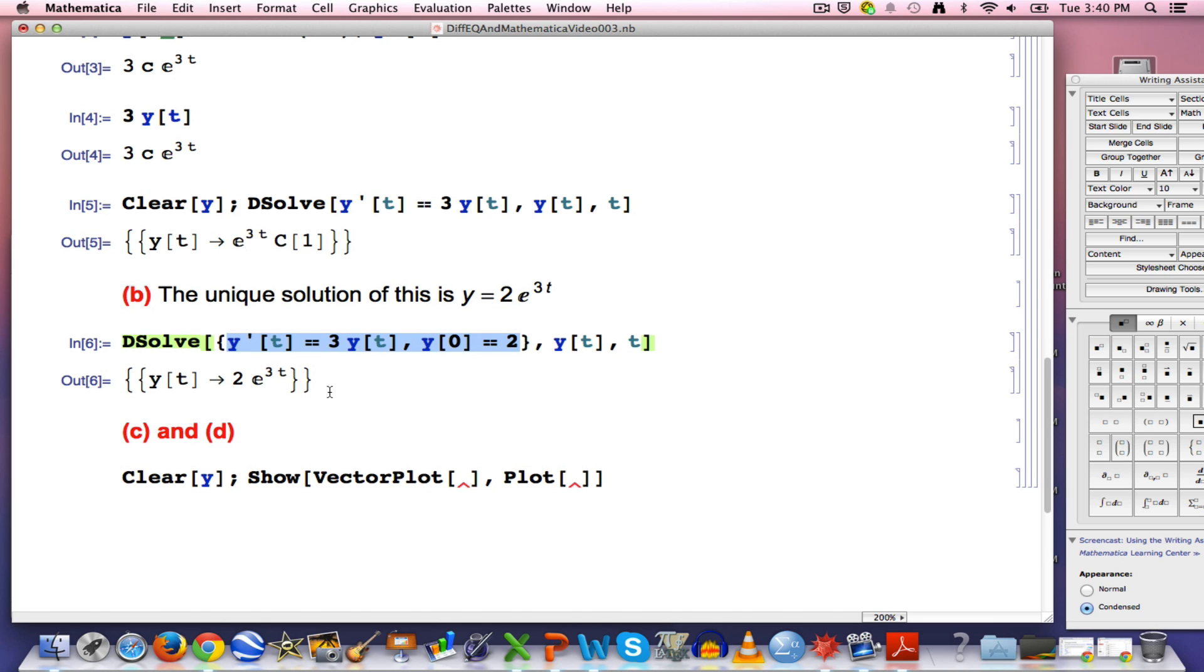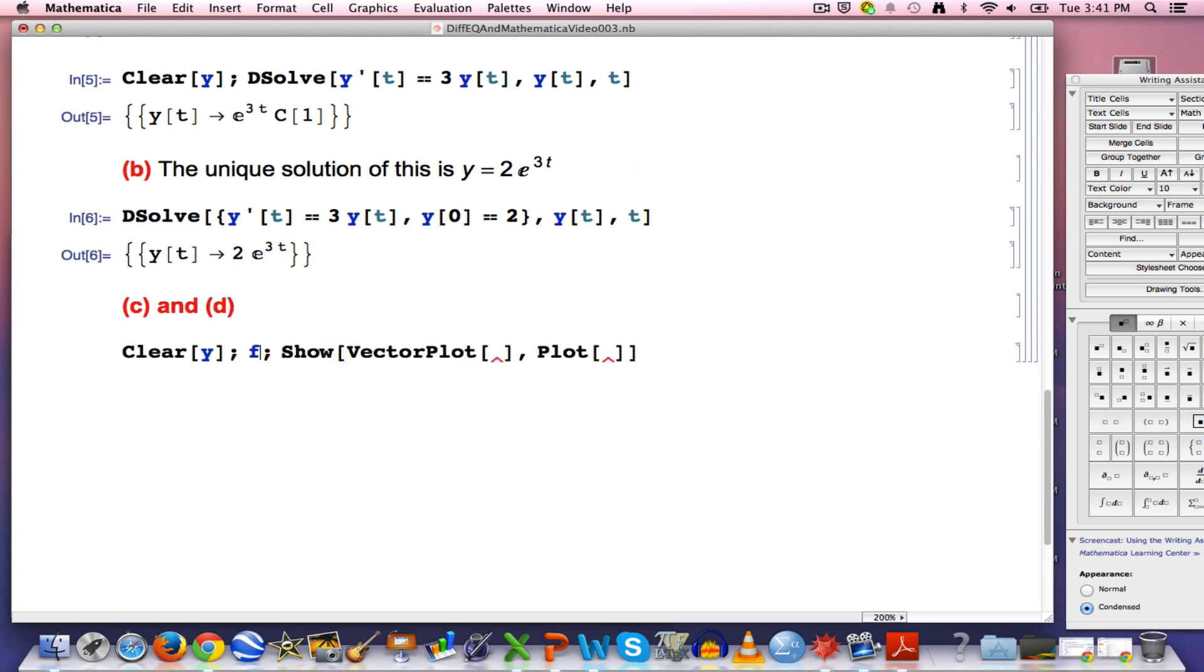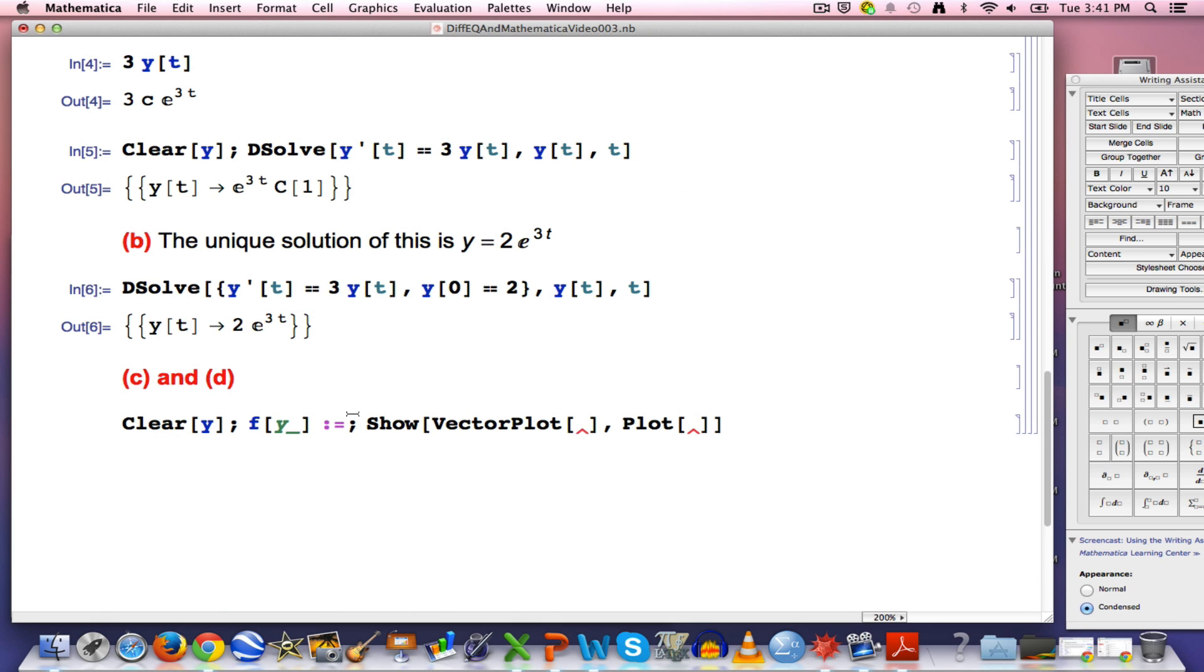Now, I want to plot this unique solution along with what's called the slope field for the differential equation. I'm going to clear y. I'm going to define a function to represent the right hand side of my differential equation. The right hand side just depends on y, it's 3y. That's going to be the function that I define f of y to be. In the first two videos, I defined an f of t function to represent the right hand side like t squared minus 1 in the last video. I'm going to combine two plots. VectorPlot is going to generate the slope field. Plot will graph the function. Show combines these plots.